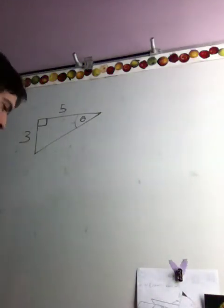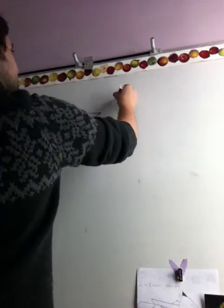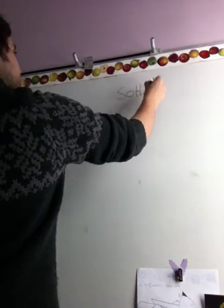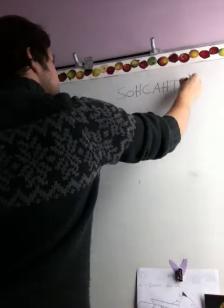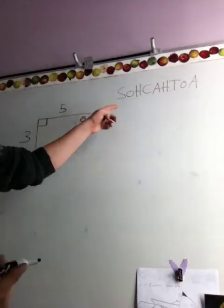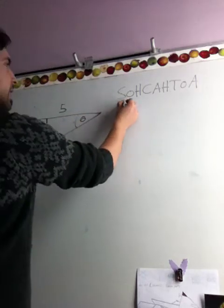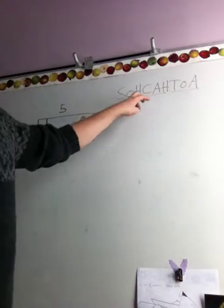So we're going to talk about SOHCAHTOA now. You've seen this in class. We've talked about it a great deal. S-O-H-C-A-H-T-O-A. Okay, so what does this mean? Well, think of it as three sets of three letters.